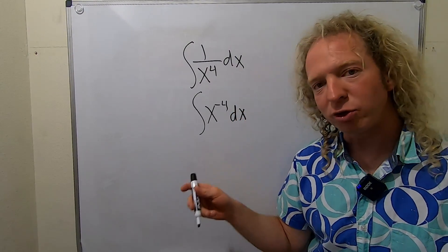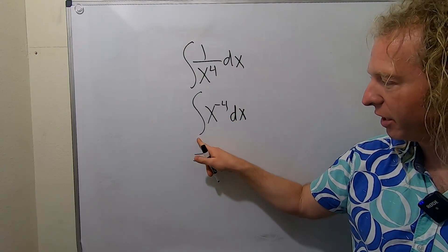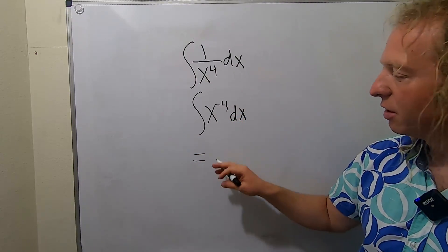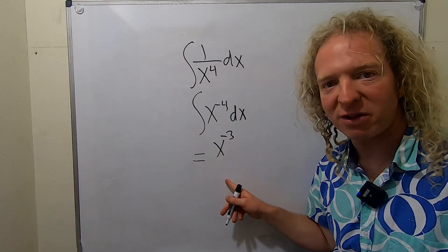Okay, now we can use the power rule. The power rule says that we add 1 to this number, so we drop the integral sign, we drop the dx, so we get x to the negative 3, and then you divide by the result.